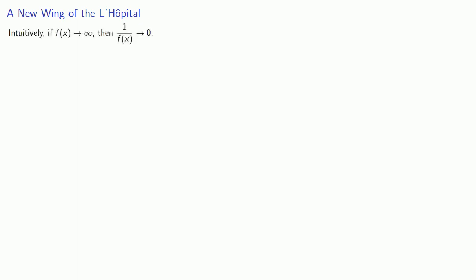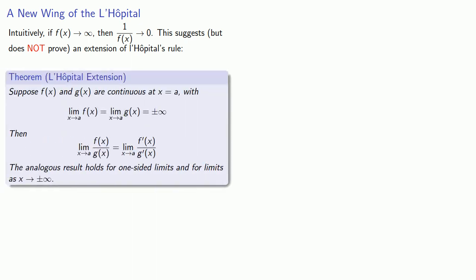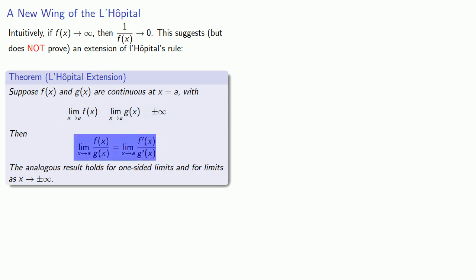These ideas allow us to open up a new wing of the L'Hospital. Intuitively, if our function goes to infinity, then 1 over our function goes to 0, which suggests an extension of L'Hôpital's rule. Suppose f(x) and g(x) are continuous at x = a, where the limit of both functions is ±∞. Then the limit of the quotient equals the limit of the quotient of the derivatives. The analogous result holds for one-sided limits and for limits as x goes to ±∞.